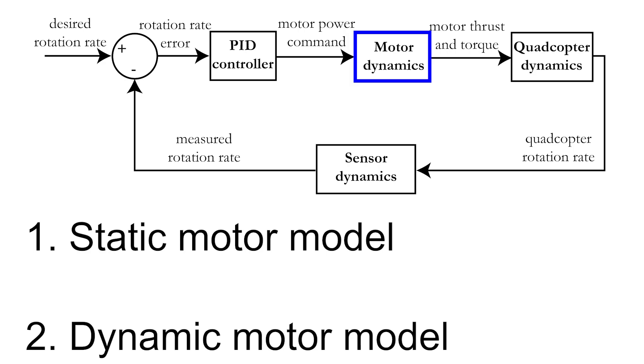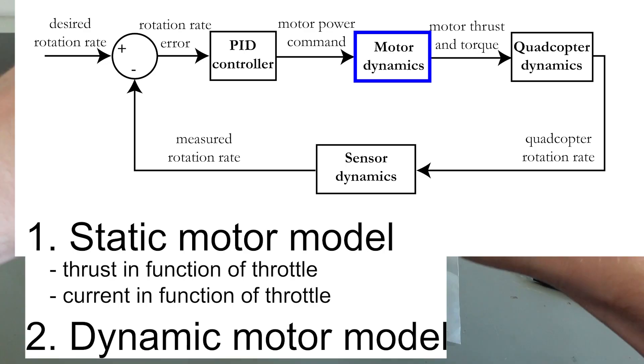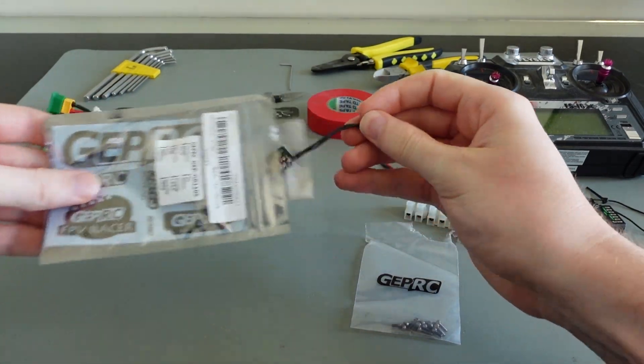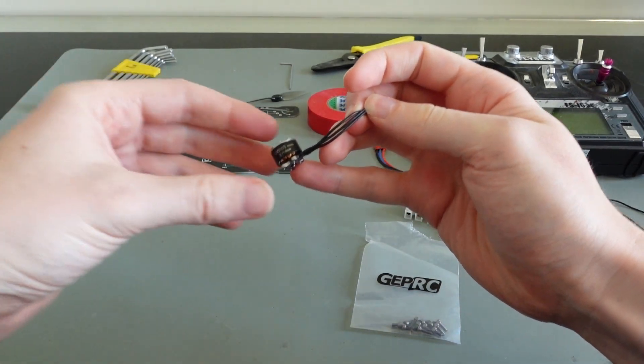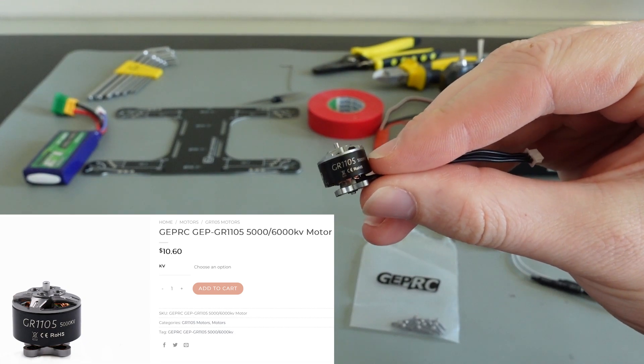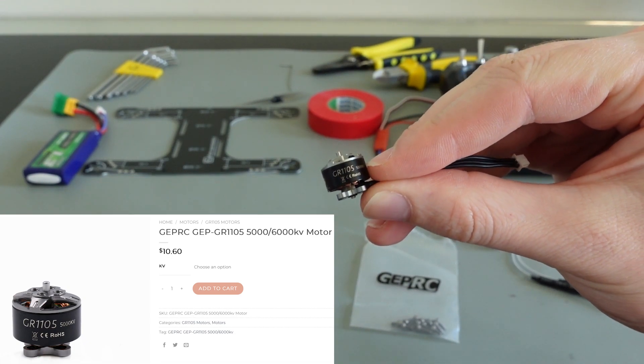Let's start with the static motor model, where we will try to develop two equations giving the motor thrust and consumed current in function of the throttle. For our drone, we used four GE PRC 1105 brushless motors rated at 5000 kV. These can be easily bought online for around 10 dollars per piece.